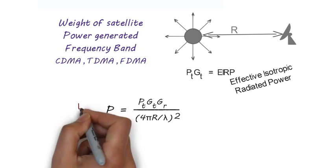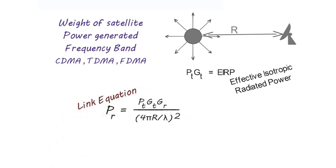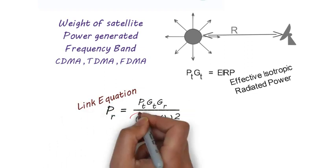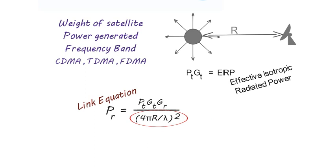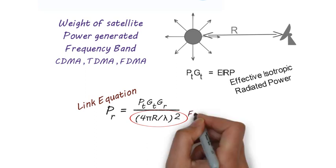Here the denominator term, that is 4πr divided by λ whole square, denotes the free space loss.